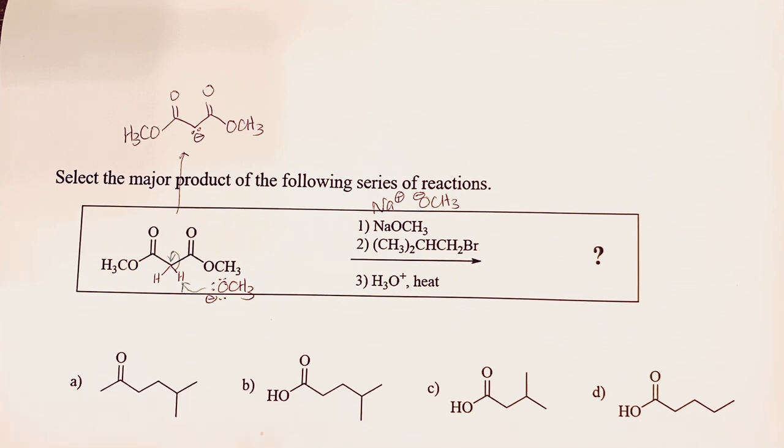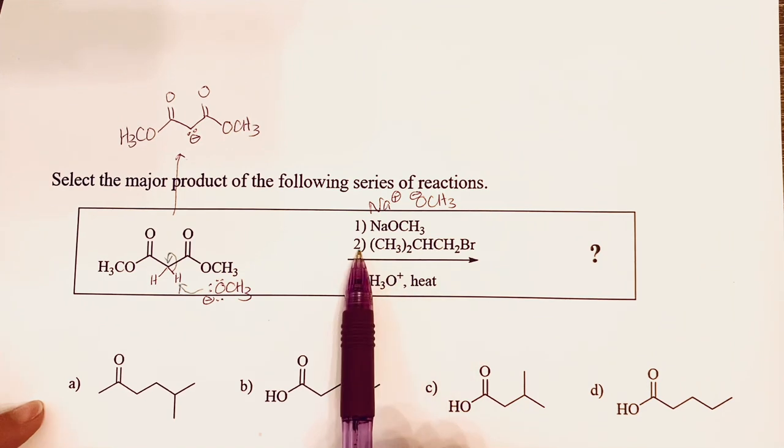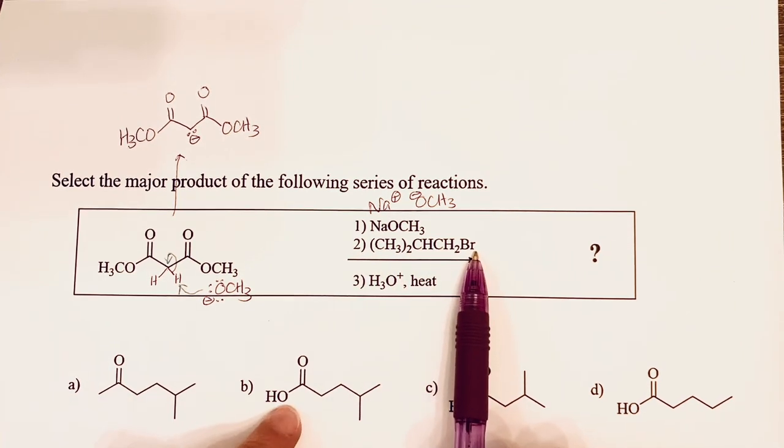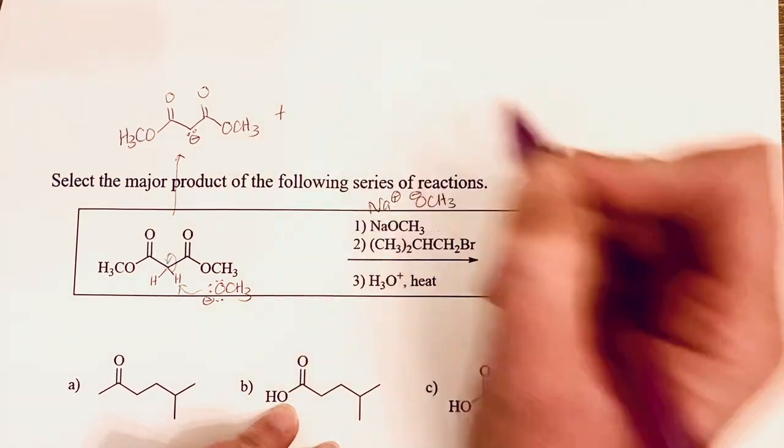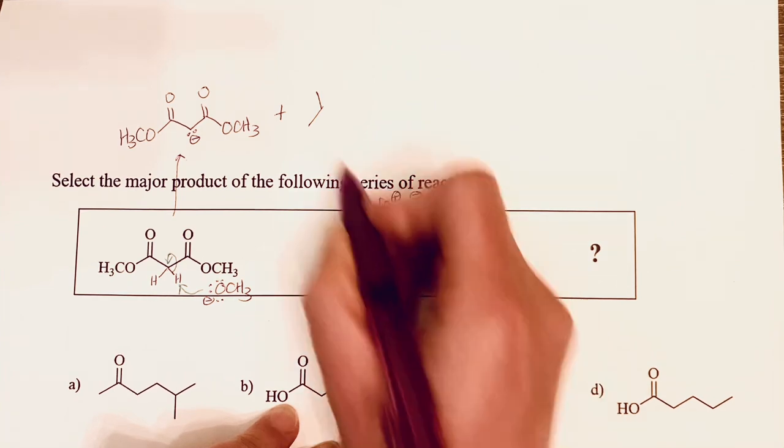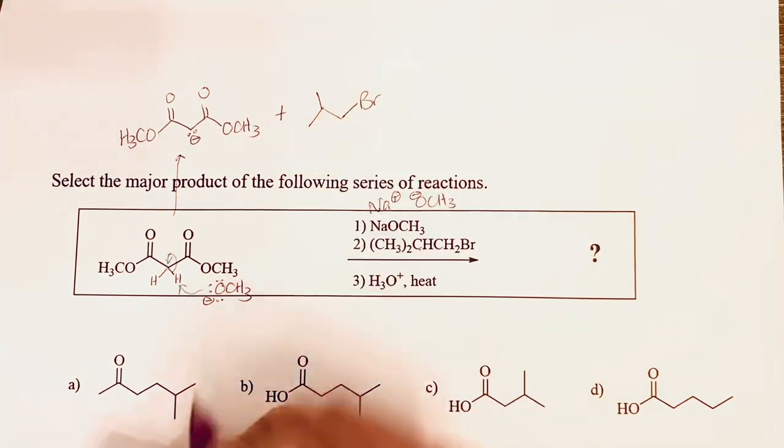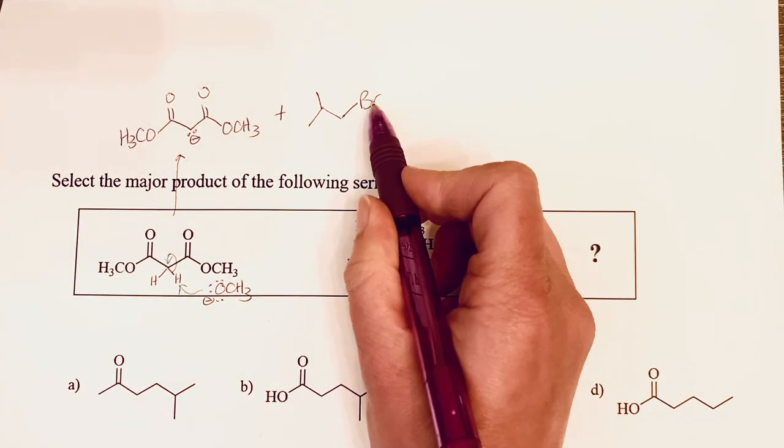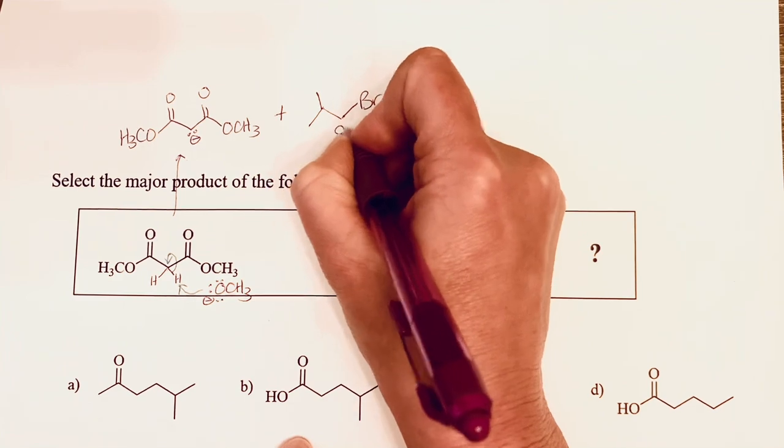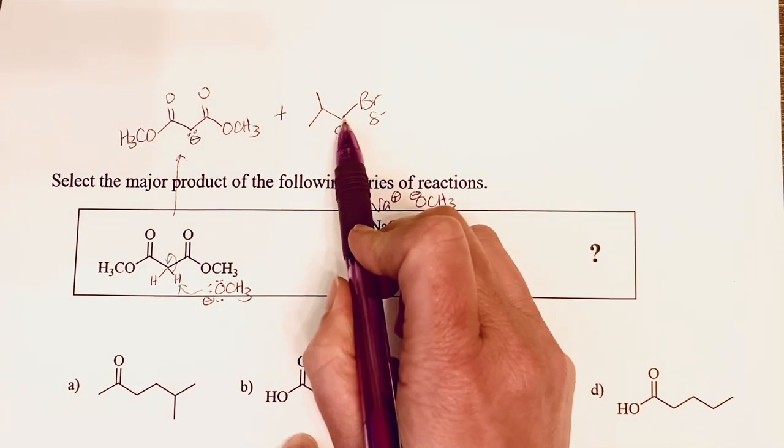Once we form this nucleophile, if we look at what we're adding in the second step, it's an alkyl halide, and that is an electrophile. I'm going to draw the structure of that alkyl halide: you've got two methyl groups attached to the same carbon, then a CH2, and then the bromine. The carbon that's attached to the bromine has a partial positive charge and the bromine has a partial negative charge, so this is our electrophilic carbon.